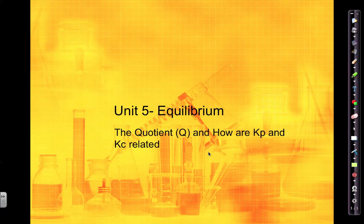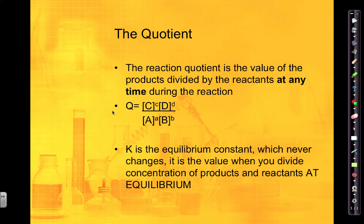In this video we're going to go over something called the reaction quotient Q, and also how Kp and Kc are related. The quotient is very important in equilibrium and it's very similar to K. You measure it the same way — you take the concentration of each of the products to the power of its coefficient and divide by the reactants to the power of their coefficients. That's how you get Q, which is the same as how you get K, but Q is at any time of the reaction, so it doesn't necessarily mean it's at equilibrium.